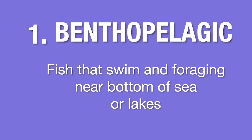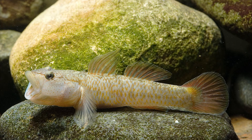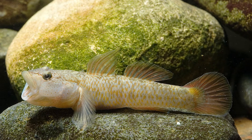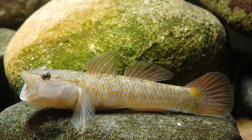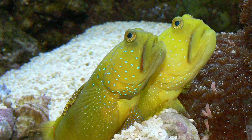Benthopelagic refers to fish that swim and forage near the bottom of sea or lakes where they're floating in the water column just above the sea floor. The fish roaming within this area are called benthopelagic fish. Since this type of species have neutral buoyancy within the presence of a swim bladder, they can float in the water without much effort.